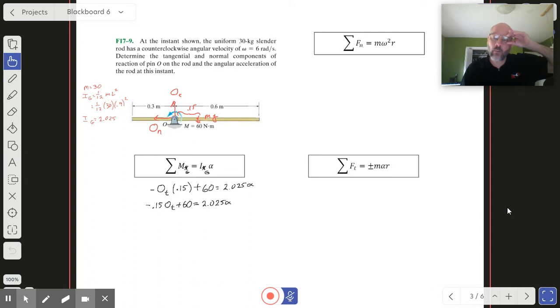Let's come up to our summation of the normal components of force. We only have one force in the normal direction, and that's On. We can get to that pretty easily. We're going to say On = m·ω²·r, where r is the distance from the point of interest to the center of mass.